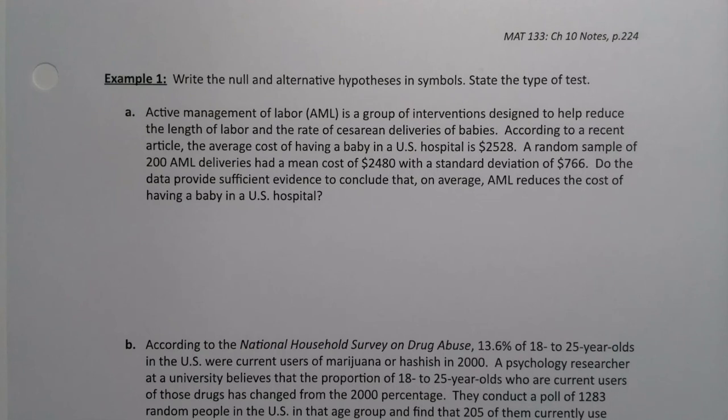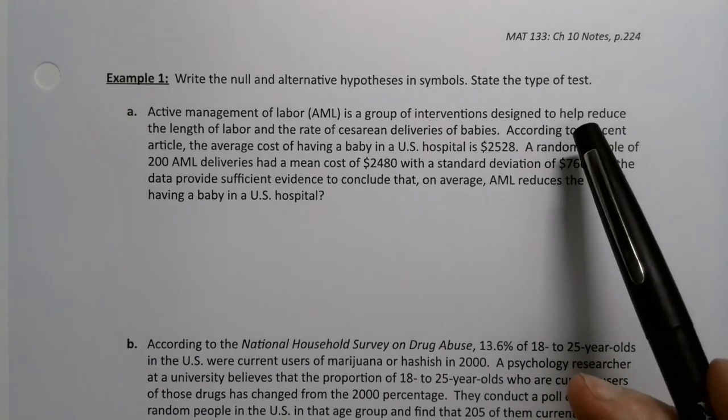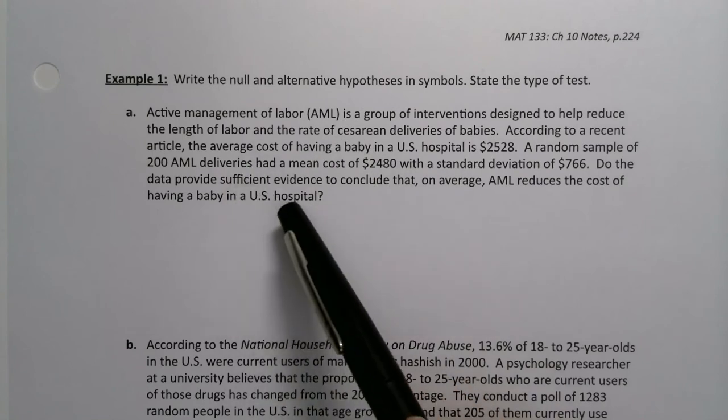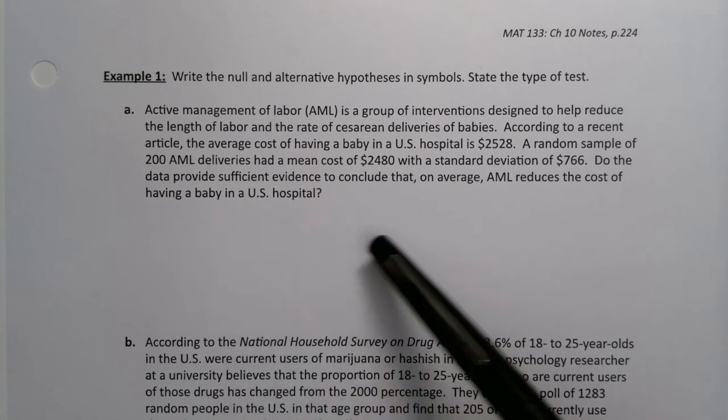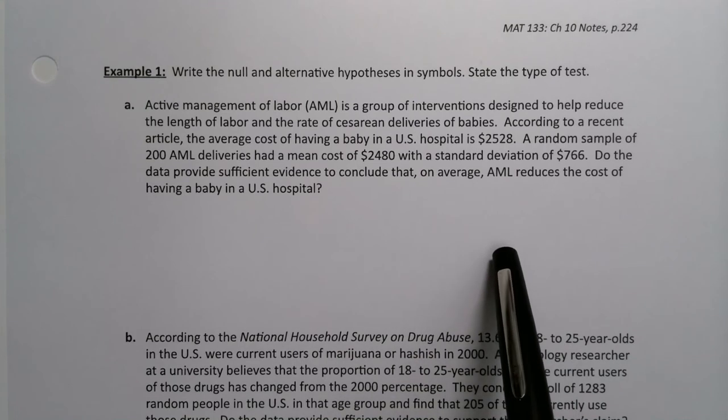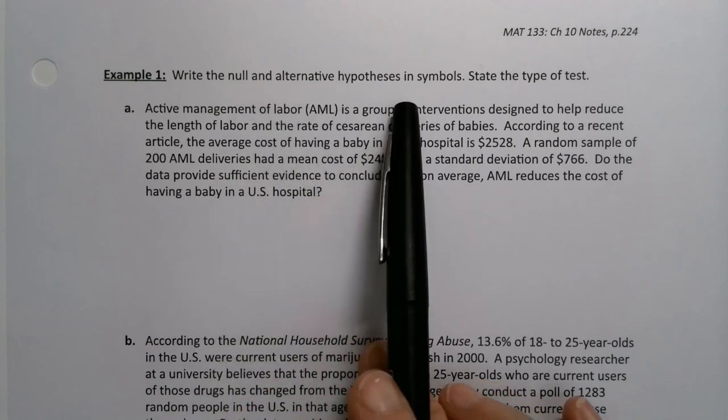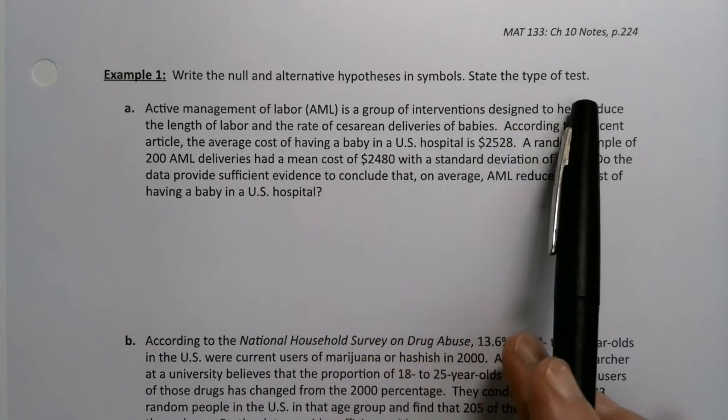For this example, we're going to put our ideas about hypotheses into action. You're going to see what some of the problems in this chapter are going to look like. They tend to be large paragraphs, sometimes large paragraphs with data attached to them. But this particular page has no data tables attached. We're not only going to write the null and alternative hypotheses in symbols, but we're going to state the type of test.